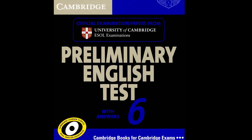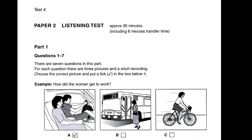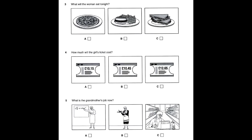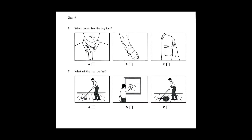This is the Cambridge Preliminary English Test, Test 4. There are four parts to the test. You will hear each part twice. For each part of the test, there will be time for you to look through the questions and time for you to check your answers. Write your answers on the question paper. You will have six minutes at the end of the test to copy your answers onto the answer sheet. The recording will now be stopped. Please ask any questions now, because you must not speak during the test.